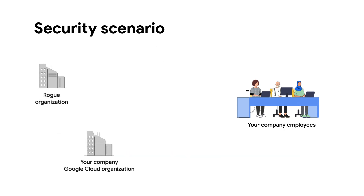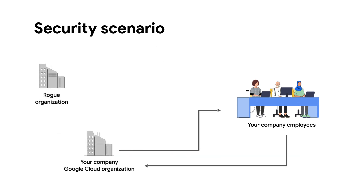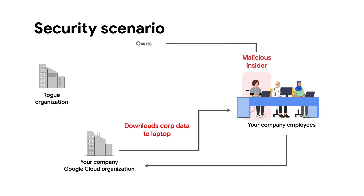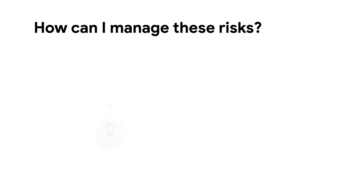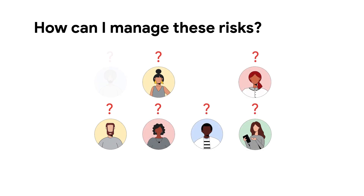In another attack scenario, a malicious insider could deploy their own rogue Google Cloud organization, grant their corporate identity access to this rogue organization via IAM policy, and exfiltrate corporate data to this destination. Effectively, security administrators cannot prevent employee identities from accessing resources outside of their corporate organization in Google Cloud.